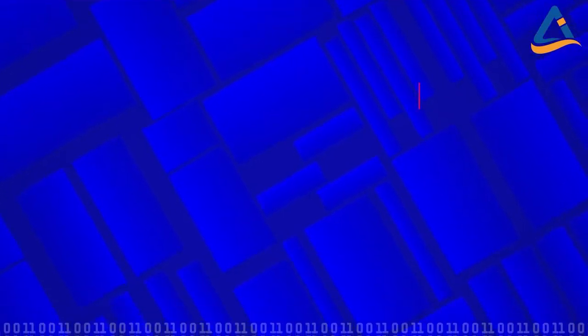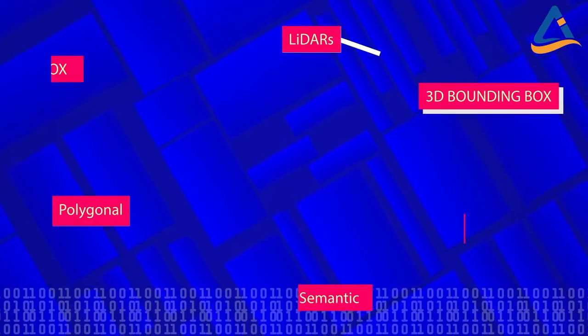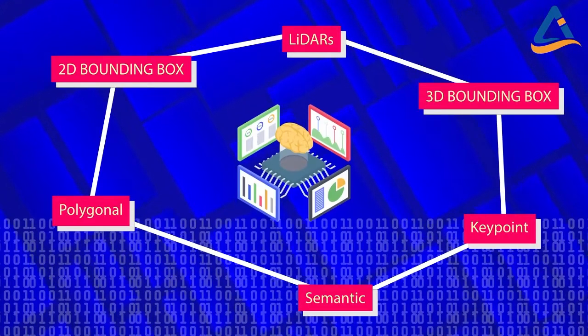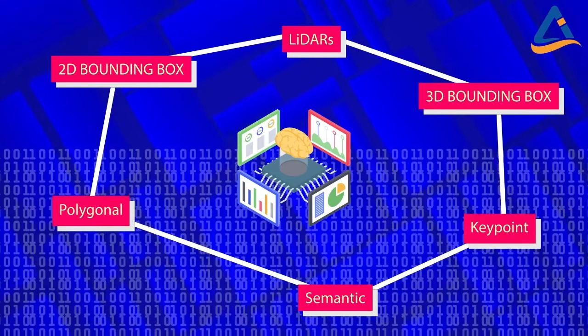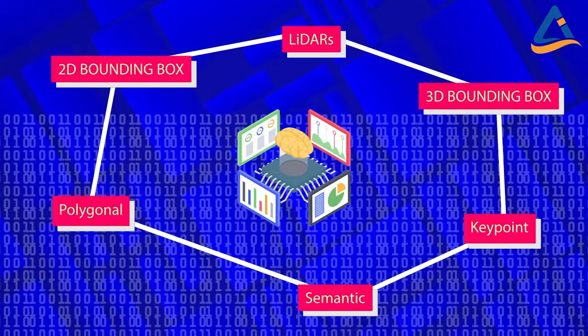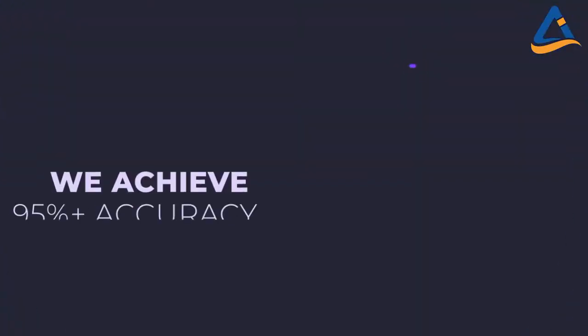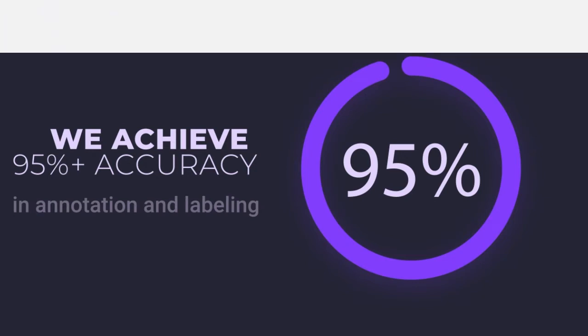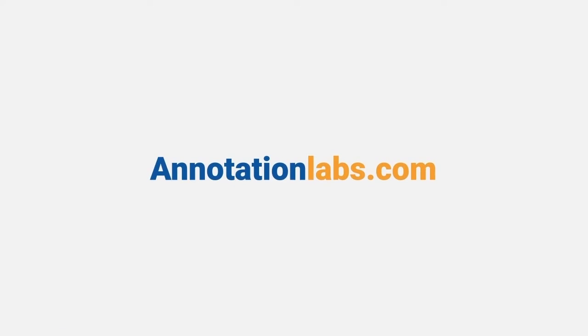Usually, one or more different types of image annotations are used for higher accuracy of image training datasets. We achieve 95% plus accuracy in our annotations of image datasets for advanced training of your AI and ML algorithms. Speak with our experts today at annotationlabs.com.